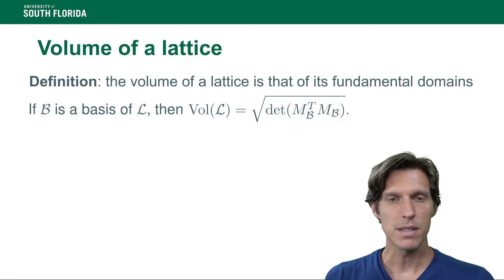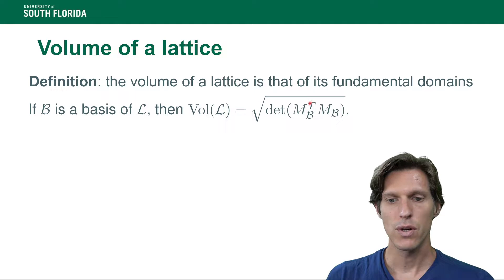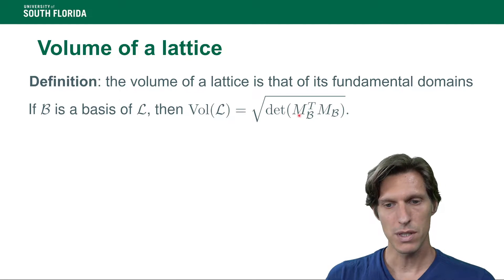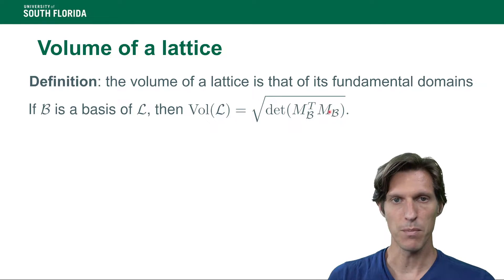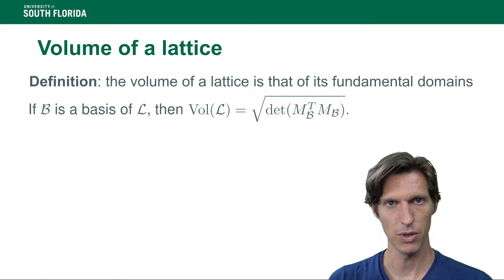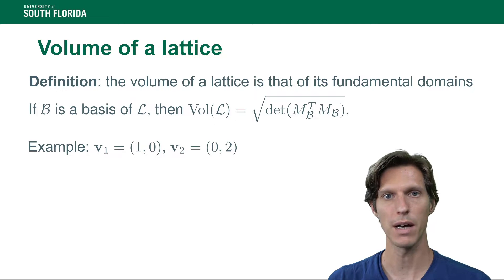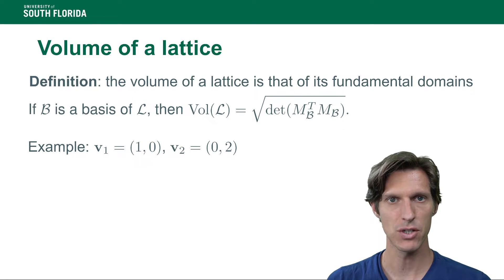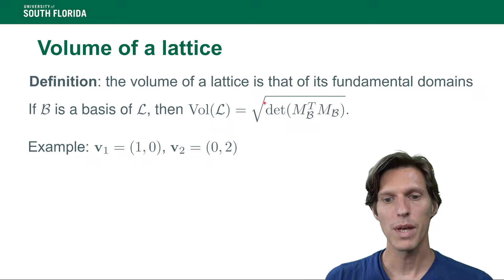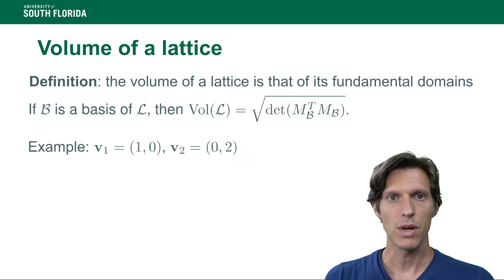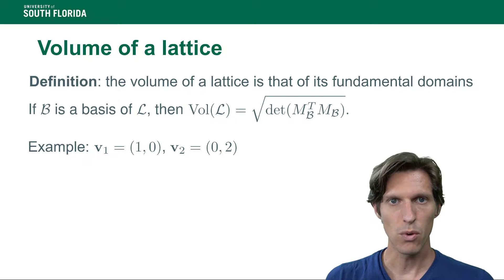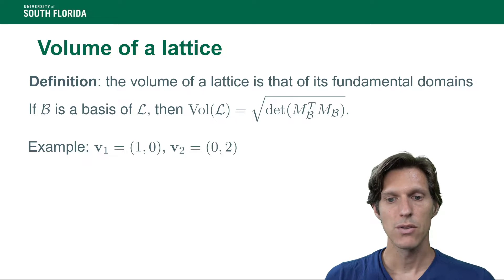The volume of the lattice relates to the notion of fundamental domain because it's the volume of one of the fundamental domains of the lattice. If we have a basis of L, the volume of the lattice is going to be the square root of the determinant of the product of the matrix transposed times itself, where M is the matrix of a basis. This is the most general case, but it simplifies greatly when we have a lattice of dimension n represented by a square matrix — in that case, it's just the absolute value of the determinant. In general, a lattice can have a rectangular basis, and the determinant of that rectangular matrix is not defined, but the determinant of the matrix product is defined because this is a square.